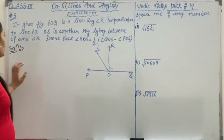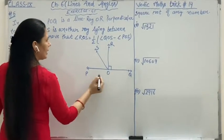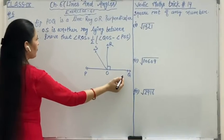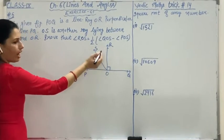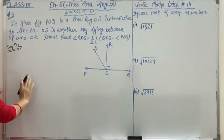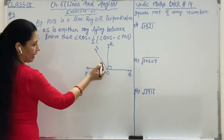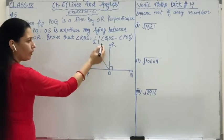In this question, POQ is a line and ray OR is perpendicular to the line PQ. OS is another ray lying between OR and OP, and we have to prove that angle ROS equals half of angle QOS minus angle POS.